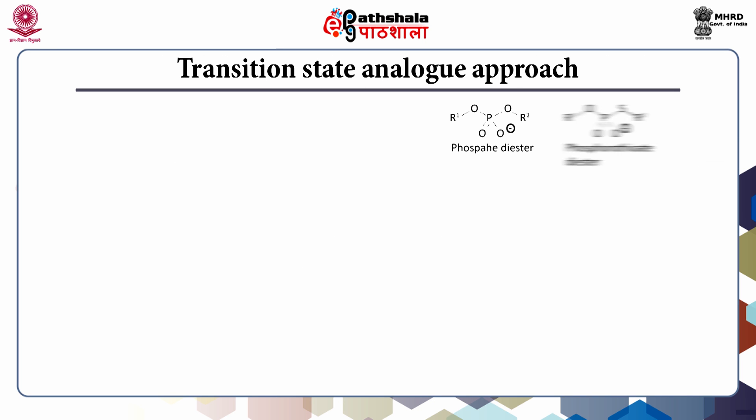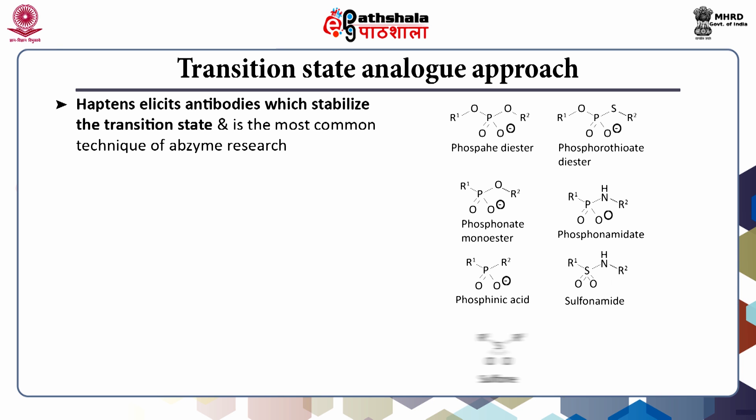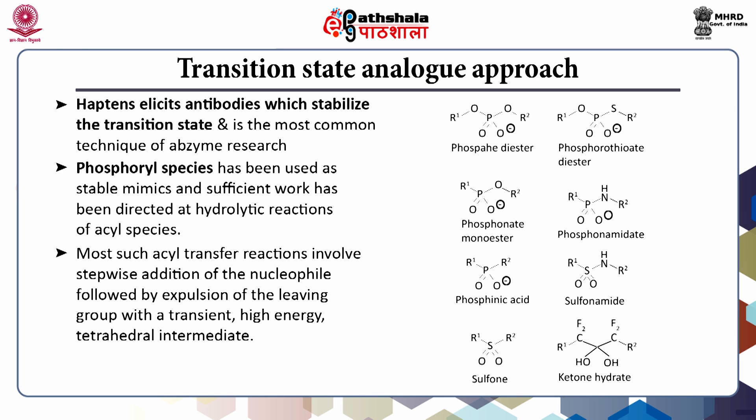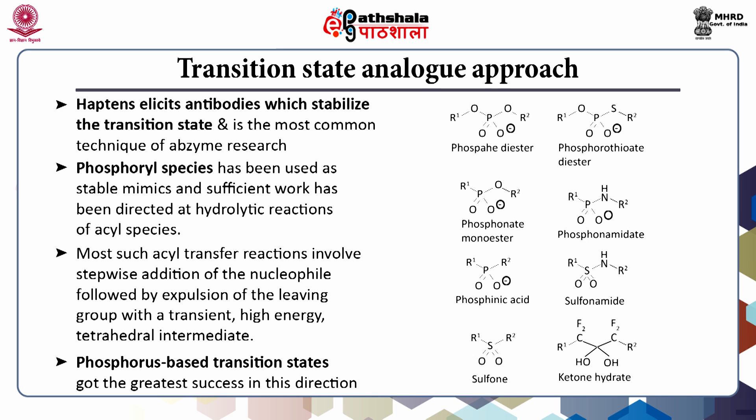In the transition state analog approach, haptens elicit antibodies which stabilize the transition state, and this is the most common technique of abzyme research. The phosphoryl species has been used as stable mimics, with significant work directed at hydrolytic reactions of acyl species. Most acyl transfer reactions involve stepwise addition of a nucleophile followed by expulsion of the leaving group, with a transient high-energy tetrahedral intermediate. Phosphorus-based transition states have achieved great success in this direction.